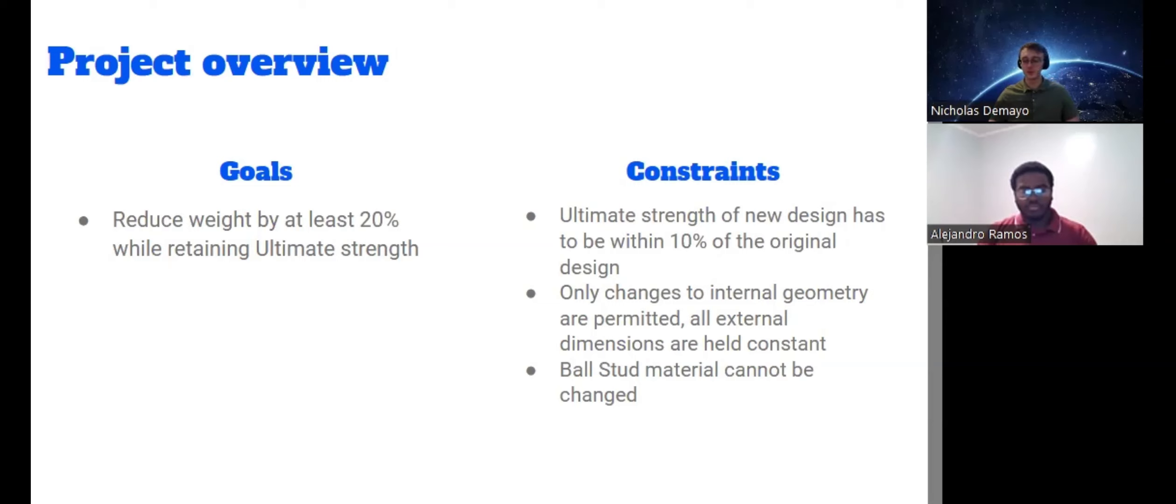To complete this goal, we are given a set of constraints. We have to keep the ultimate strength of the new design within 10% of the original design. We are only allowed to change the internal geometry, and the material of the ball stud has to stay the same.